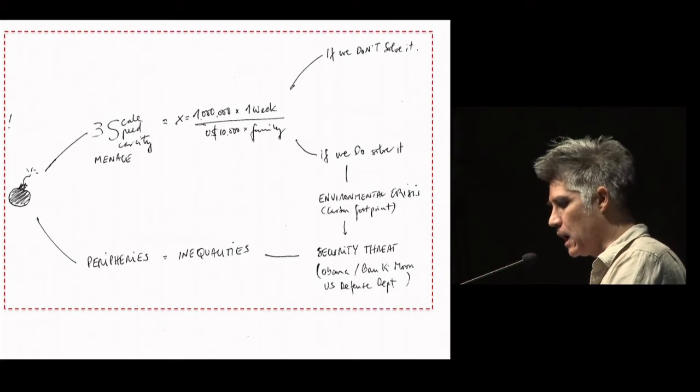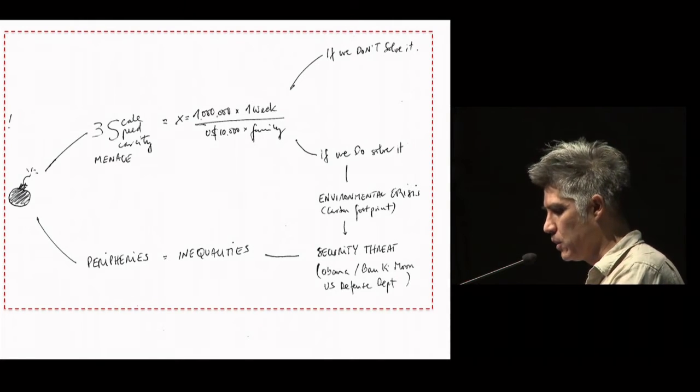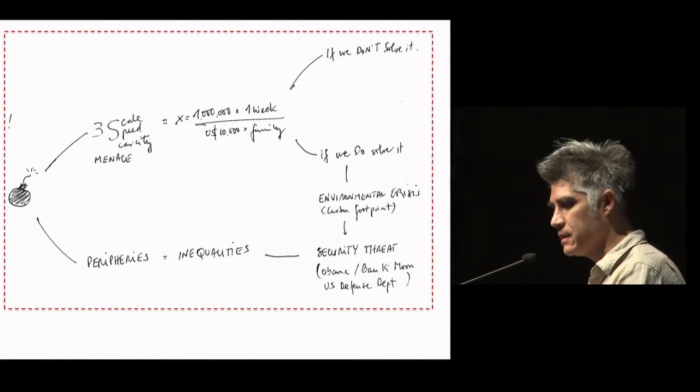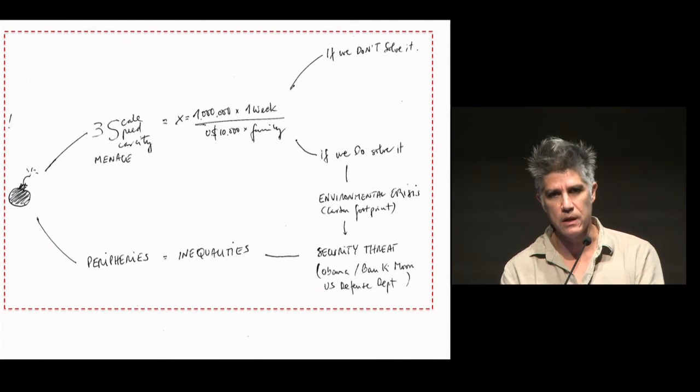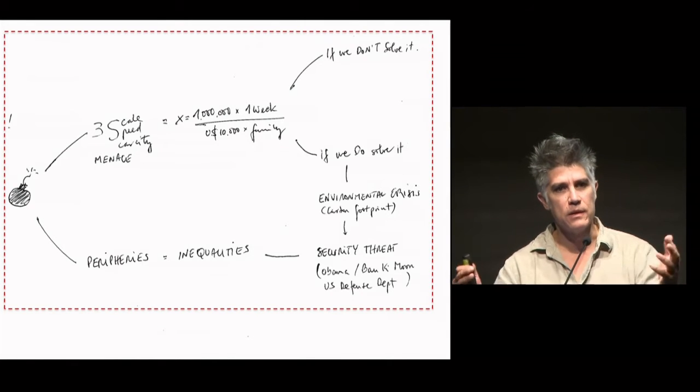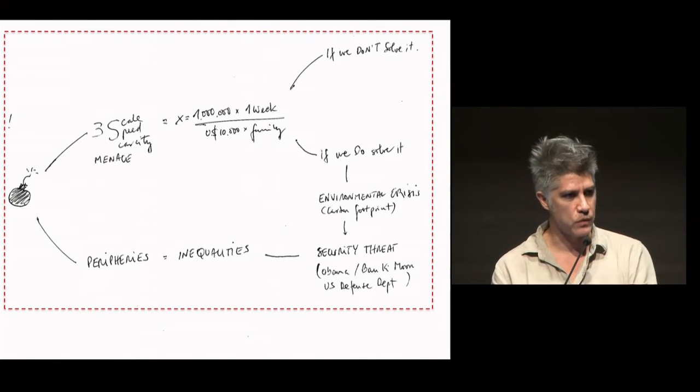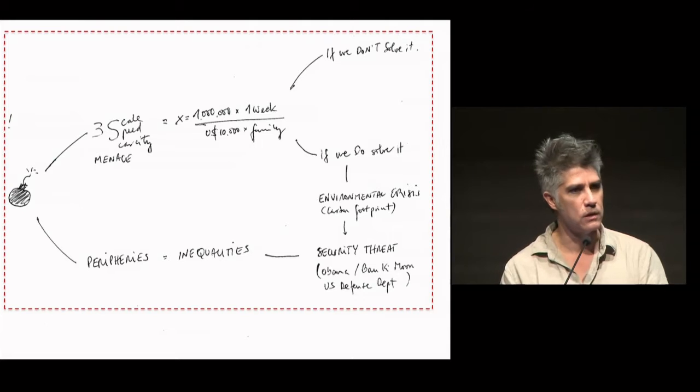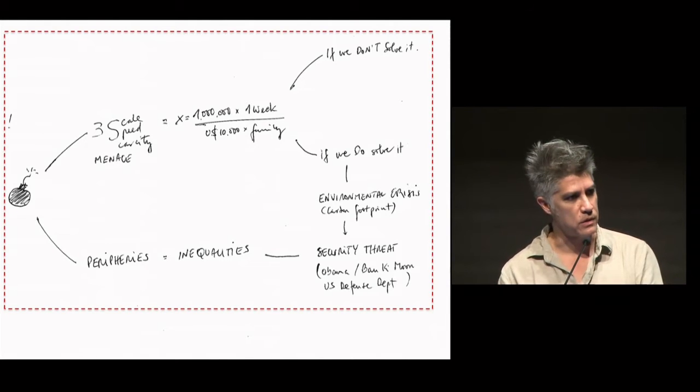So the threat comes, we thought, not long ago, from the 3S menace, the scale, speed, and scarcity of means, which, translated into numbers, means that we have to build for 1 million people per week, with $10,000 per family. That's the level of migration towards cities. So, Germany was worried about 1 million immigrants a year. Well, as a world, we need to deal with 1 million migrants per week, with $10,000 per family.